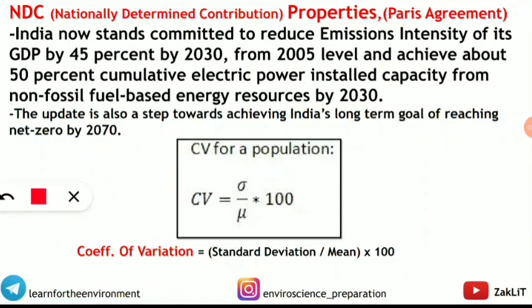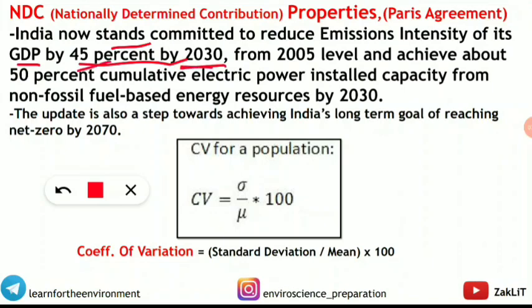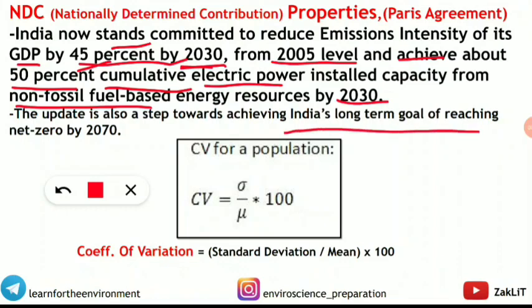The next question was on Nationally Determined Contributions (NDC) related to the Paris Agreement. Key properties: India is committed to reducing the emission intensity of its GDP by 45% by 2030 from 2005 levels, and to achieving at least 50% cumulative electric power installed capacity from non-fossil fuel based energy by 2030. India's long-term goal is net zero emissions by 2070.